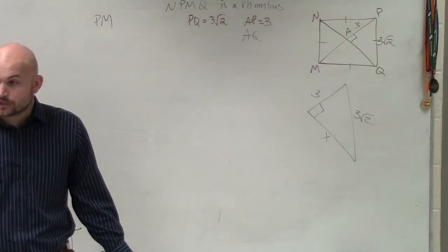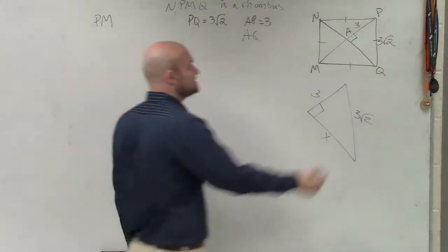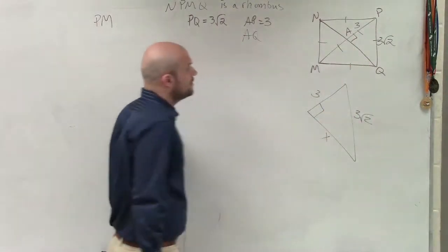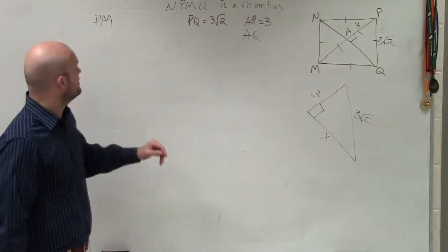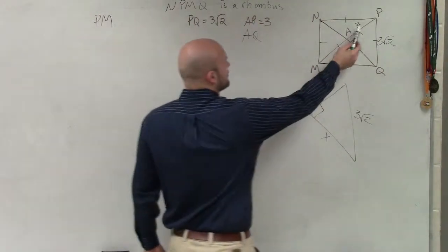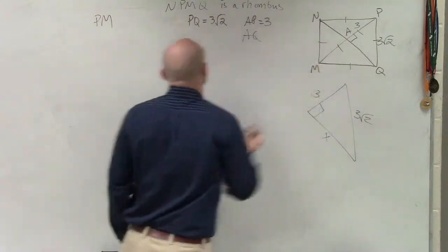What do we know? We know the diagonals are congruent, right? And they bisect each other. So, if AQ is 3, what do you think PM is? 3. 3. That's 3. So it's 6.